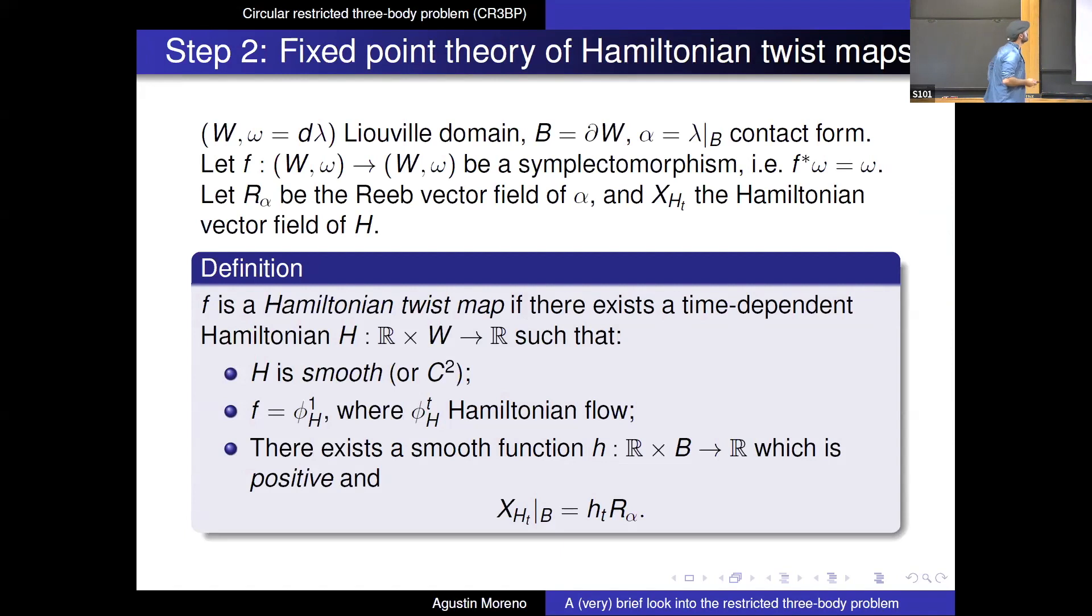So formally, you were given a neural domain, which is some symplectic manifold with an exact symplectic form. The boundary B is now a contact manifold, so it has a contact form associated to it, which is a restriction of the primitive symplectic form. Now you consider symplectomorphism, that means it's preserved as symplectic form. You consider the associated ray vector field of alpha, which is basically the dynamics associated to the contact form, and the Hamiltonian vector field associated to H. The definition that we give is we want to say that F is a Hamiltonian twist, matter if I can find a possibly friend-dependent Hamiltonian H, such that first of all, it's smooth, or at least C2. So it has some regularity.